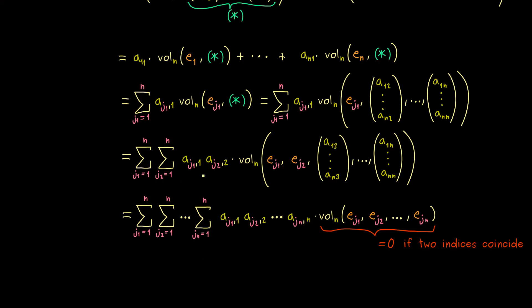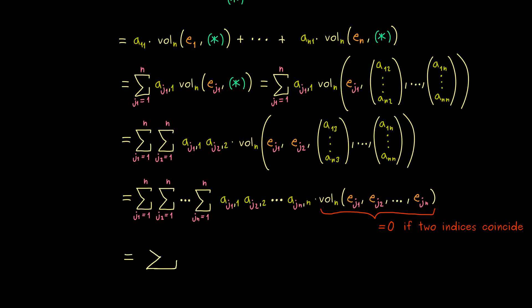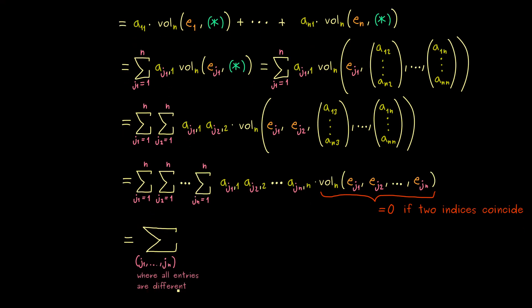In other words, our sum here just gets smaller. So for example, we could just use one big sum symbol and say what we do. We could choose a tuple where we have our indices as entries. There the entries should go from 1 to n again, but all entries should be different.